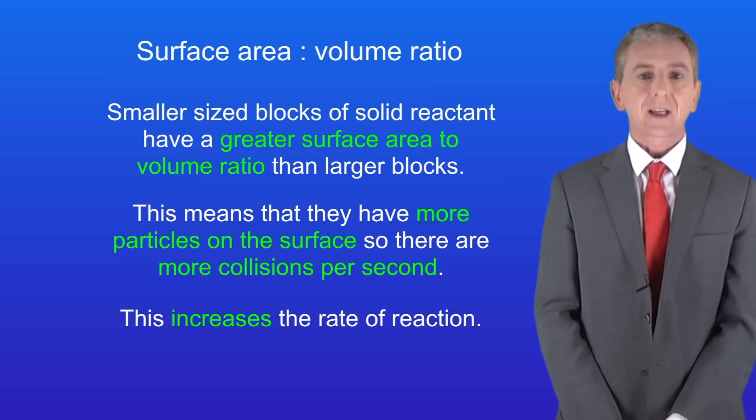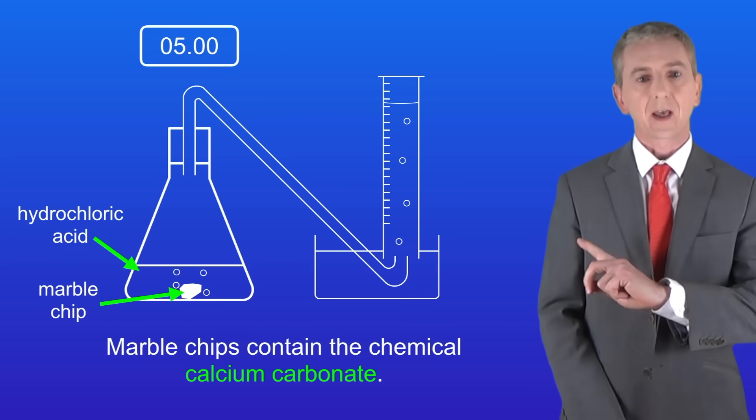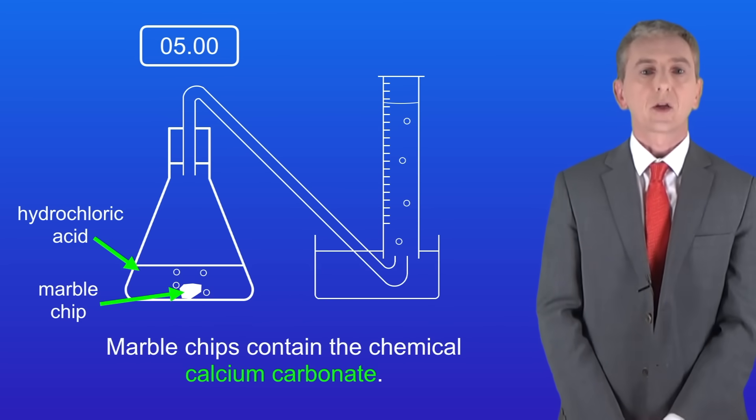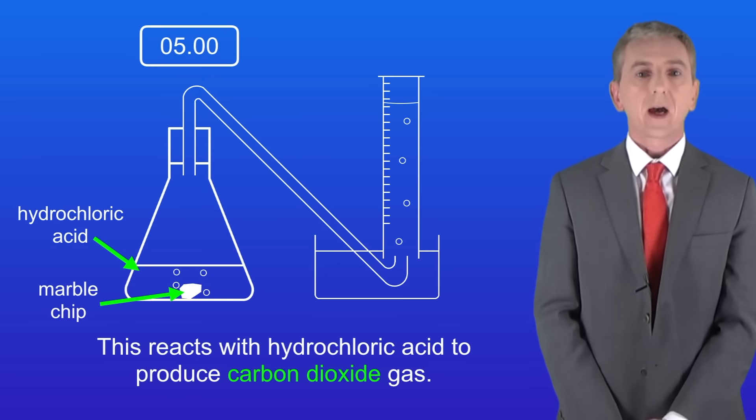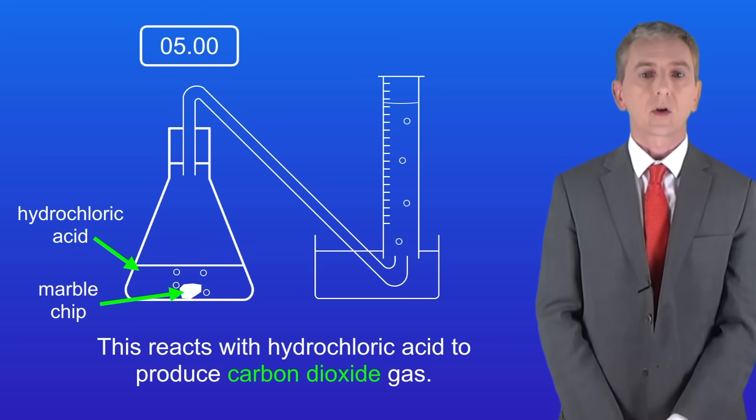Now one way of investigating the effect of surface area on the rate of reaction is to use this setup. We saw a similar setup in the required practical on rates of reaction. Marble chips contain the chemical calcium carbonate. This reacts with hydrochloric acid to produce carbon dioxide gas and we can see that here.